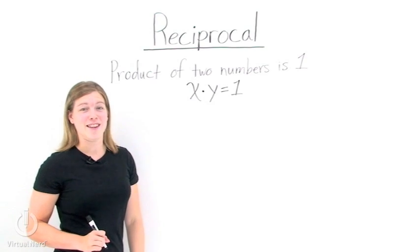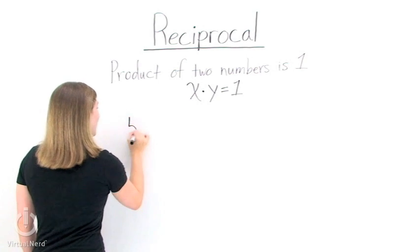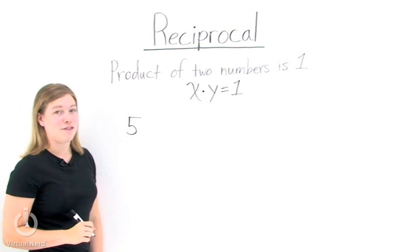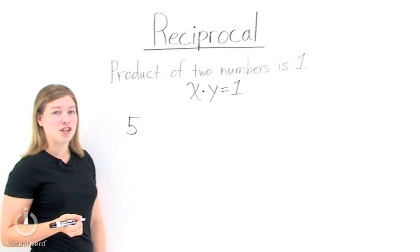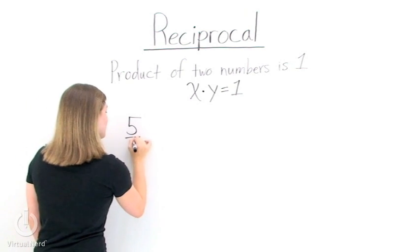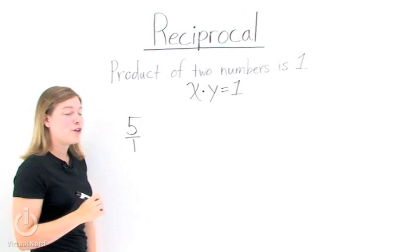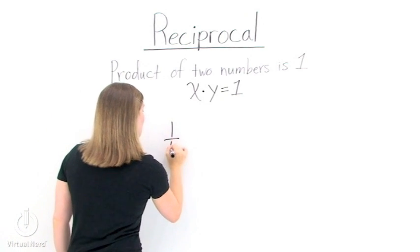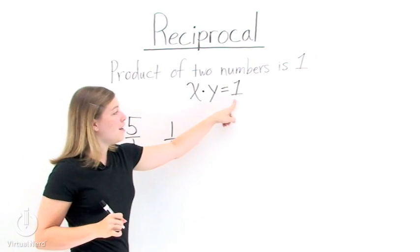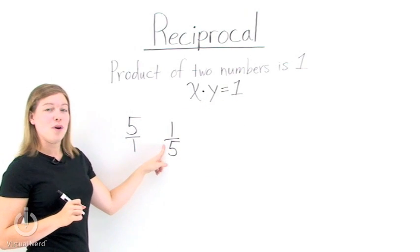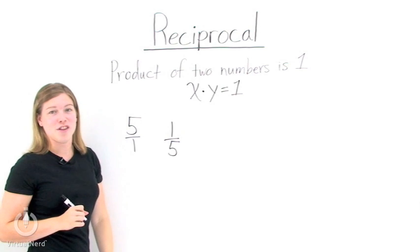Now let's look at some examples. Say we have 5, and we want to find the reciprocal of 5. Well, to do that, all we need to do is flip over the fraction. 5 is the same as 5 over 1. So if we flip over that fraction, we get 1 over 5. 5 times 1 over 5 gives you 1. That means 5 and 1 over 5 are reciprocals of each other.